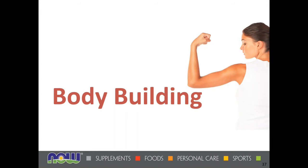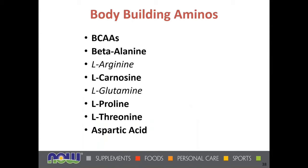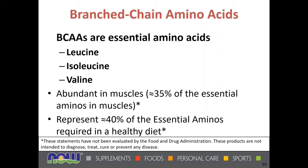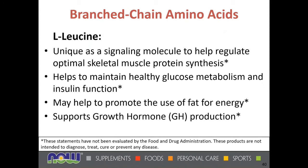When thinking about bodybuilding, several amino acids stand out: branched-chain amino acids, beta-alanine, L-arginine, L-carnosine, L-glutamine, L-proline, L-threonine, and aspartic acid. The branched-chain amino acids — leucine, isoleucine, and valine — are essential. They are very abundant in muscles, making up 35% of the essential amino acids in muscle. Out of the nine essential amino acids, these three are key. They also represent 40% of all essential amino acids required in a healthy diet, which helps explain the popularity of branched-chain amino acid supplements.